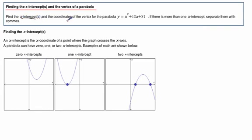It says find the x-intercepts and the vertex, the coordinates of the vertex for this parabola. This equation creates a parabola if we were to graph it. And it says if there's more than one x-intercept, separate them by commas.